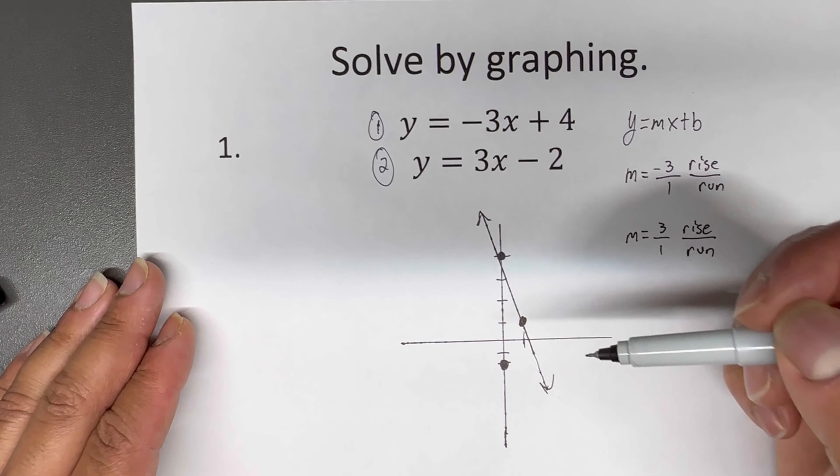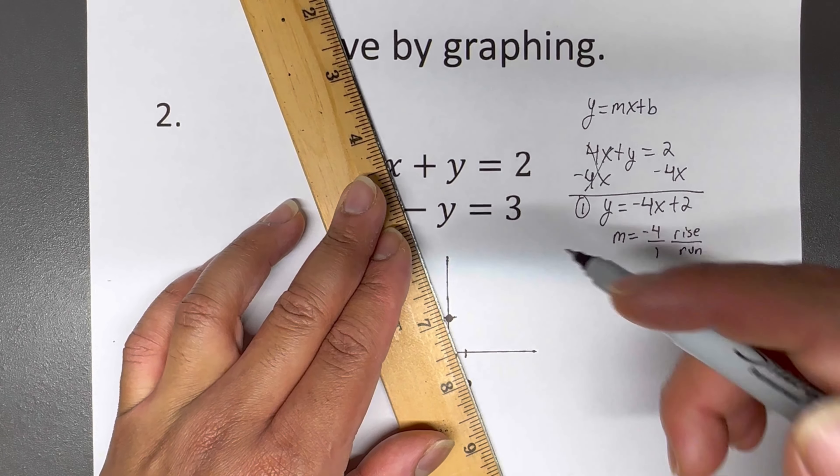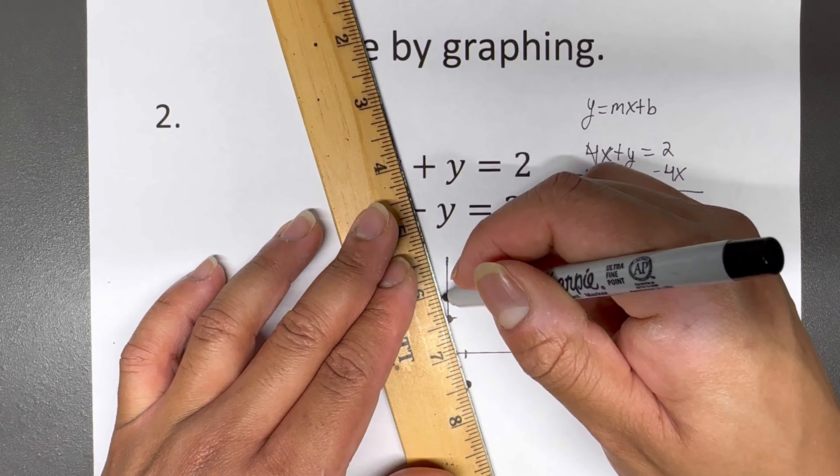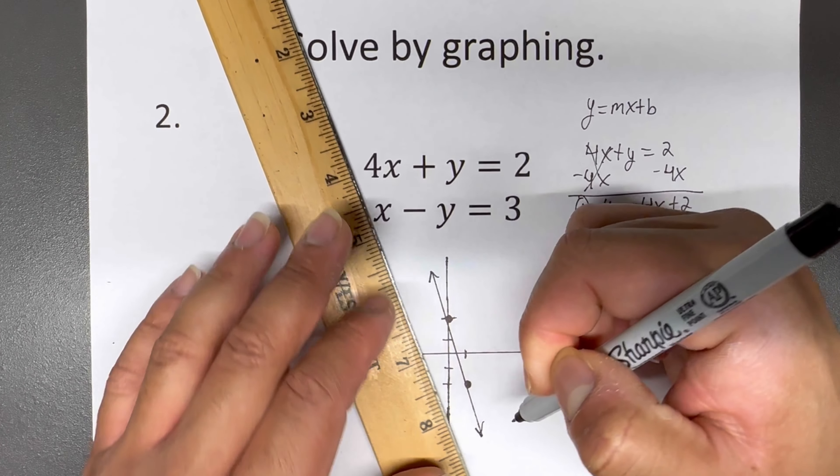The M is the slope — again, we need to see how steep this thing is. If it's not a fraction, I take that number and put it over one, which gives me rise over run. It's negative four, so from the Y-intercept I go down four and to the right one. We connect those dots and have our first line.